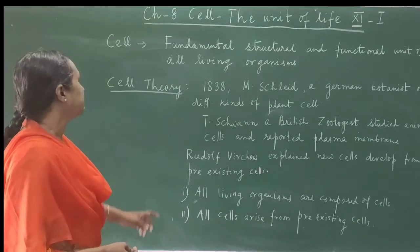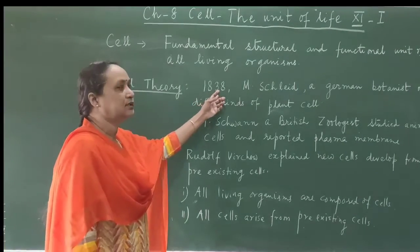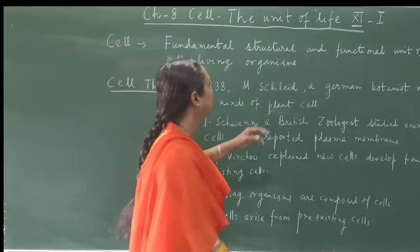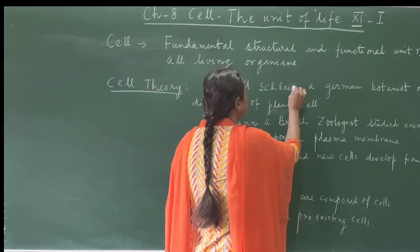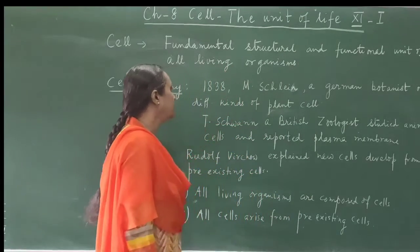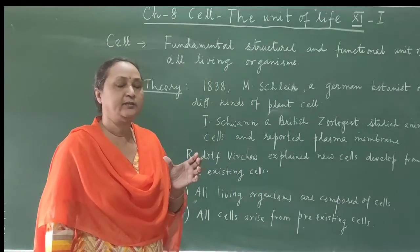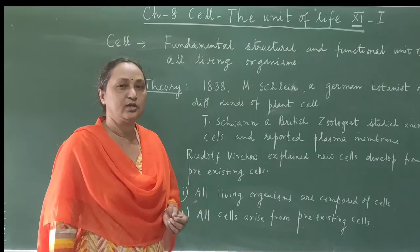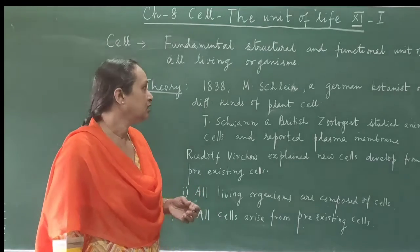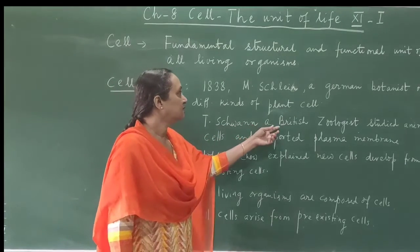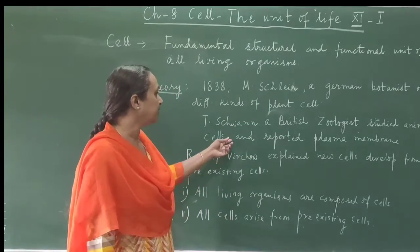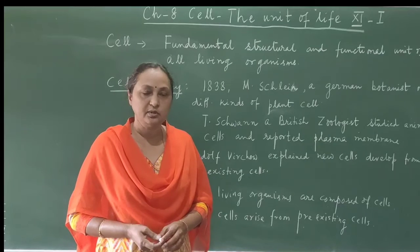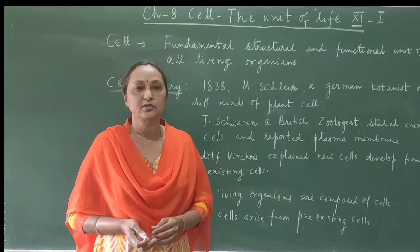The next concept is cell theory. Cell theory was proposed in the year 1838 by two scientists, Schleiden and Schwann. M. Schleiden, who was a German botanist, observed different types of plant cells and noticed that they can join together and function together to form tissue. T. Schwann, who was a British zoologist, studied different types of animal cells and reported that animal cells have a plasma membrane as the outermost boundary, whereas plant cells also have a cell wall.